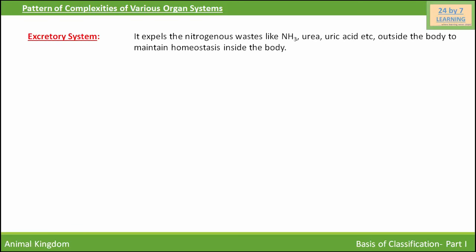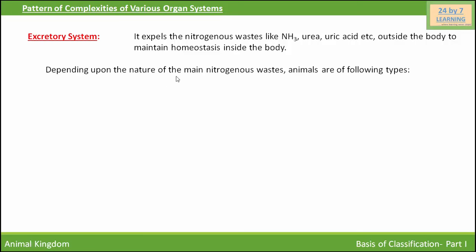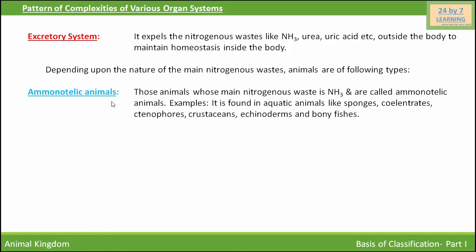Next is the excretory system. It expels nitrogenous waste like ammonia, urea, and uric acid outside the body to maintain homeostasis. Depending upon the nature of the main nitrogenous waste, animals are classified as follows. First are ammonotelic animals — those whose main nitrogenous waste is ammonia.